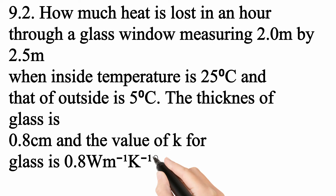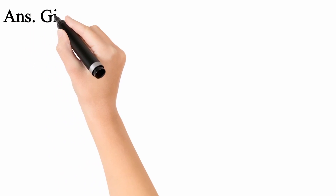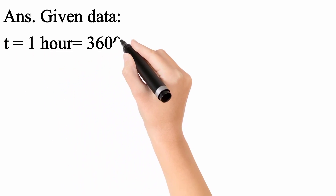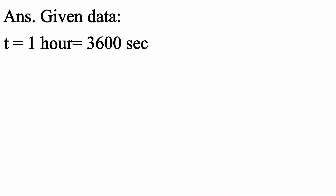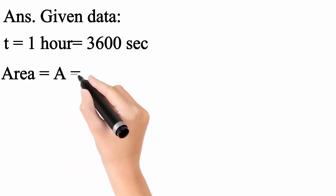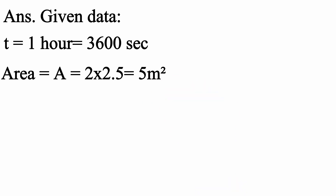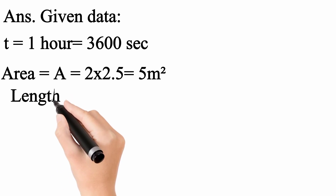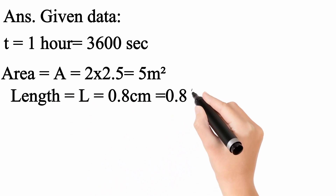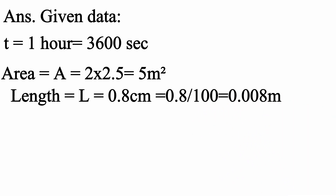अब दूसरा numerical करते हैं। इसमें thermal energy मालूम करनी है। Window की length और width दी गई है, तो area = L × width = 2 × 2.5 = 5 m square। Temperature 25°C और 5°C दिया गया है। Thickness = 0.8 cm, जिसको meter में change करेंगे: 0.008 meter। Time = 1 hour = 3600 seconds।